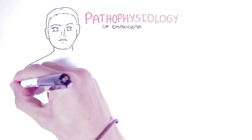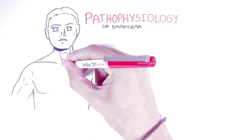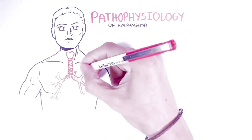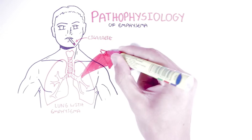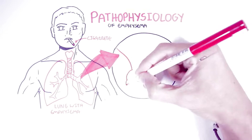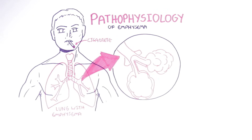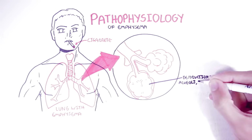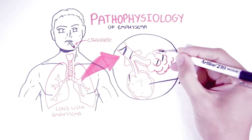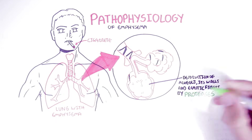Here we have a man with lungs affected by emphysema. He is a heavy smoker, which is the main cause of emphysema. Zooming into his lungs, we can see that his alveoli are severely affected — showing destruction of the alveoli, its walls and elastic fibers, mainly by proteases, which are chemicals secreted by immune cells.